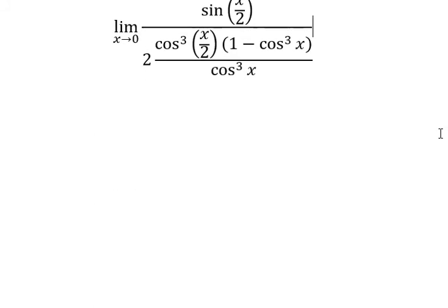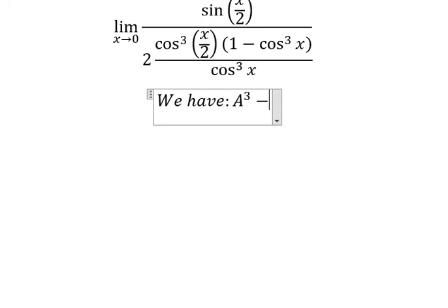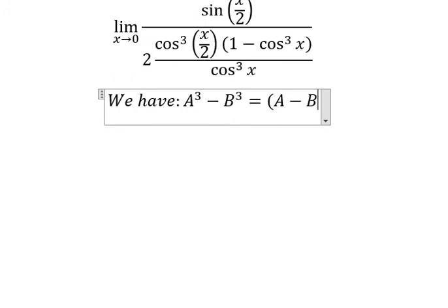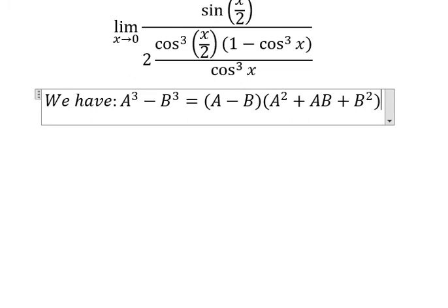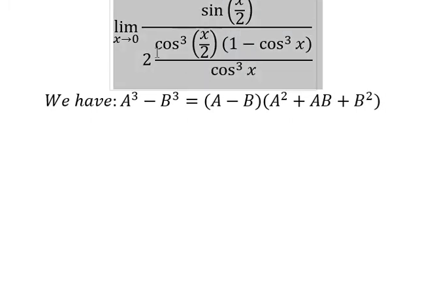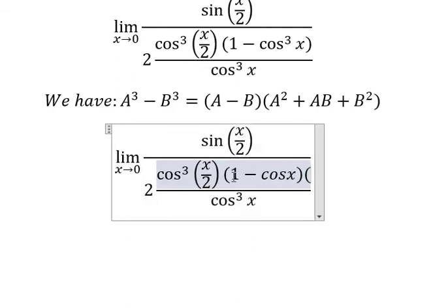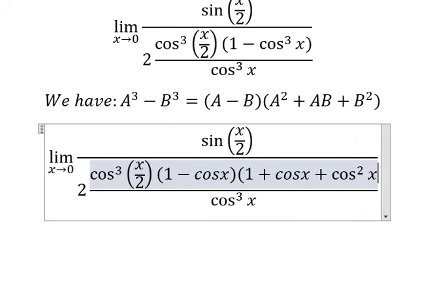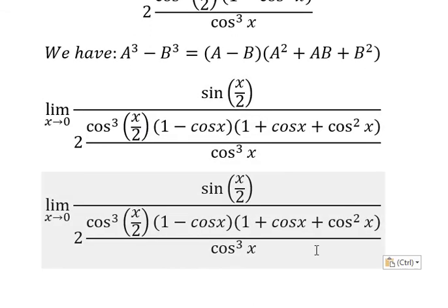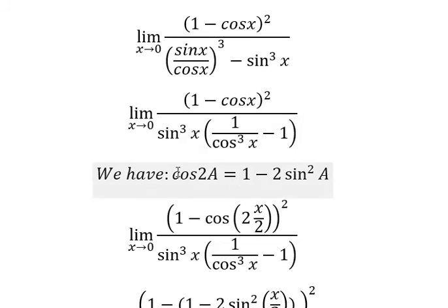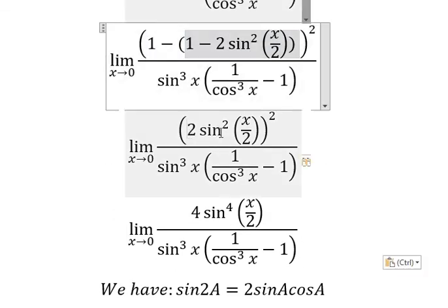Next, we have the next step. We have cosine of x plus b squared, and we apply the formula here to get this expression. For cosine x, we apply the same formula — we change cosine x into this one, and then we change it by this one, so we just have this one here.